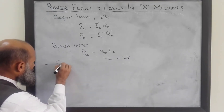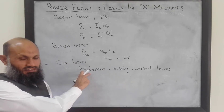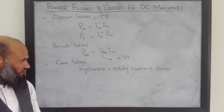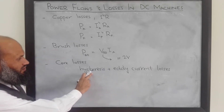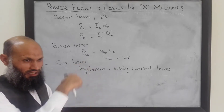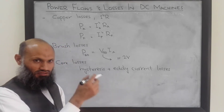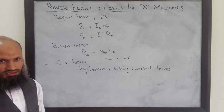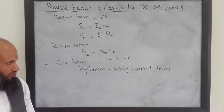Then we have core losses, which include hysteresis losses plus eddy current losses. Hysteresis losses are always present in ferromagnetic material — magnetization and demagnetization causes orientation and deorientation of domains, resulting in power losses. Since the rotor is made of conducting material rotating in a magnetic field, voltages are induced in the rotor, causing eddy currents to flow and producing eddy current losses. To minimize these eddy current losses, we generally laminate the rotor of DC machines.